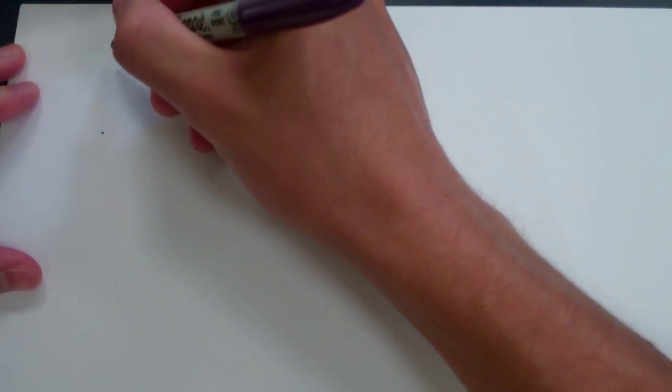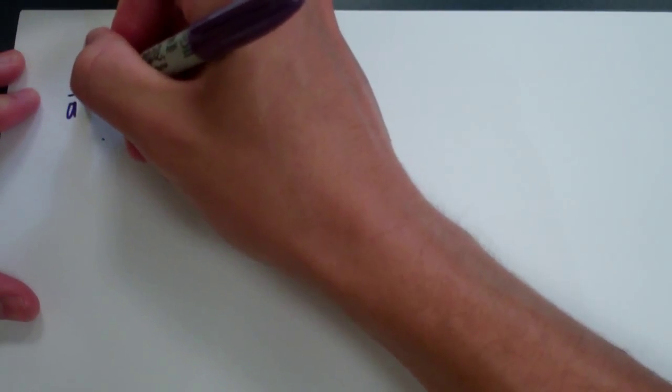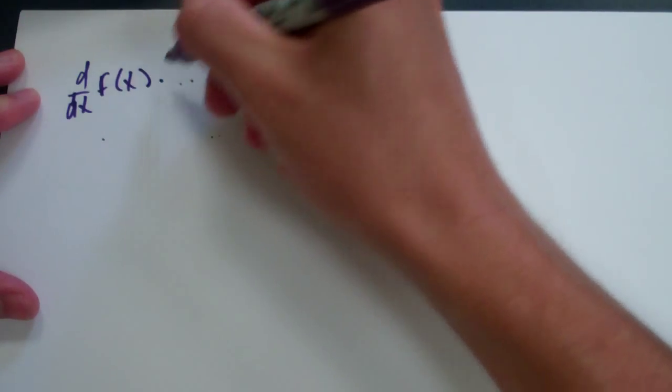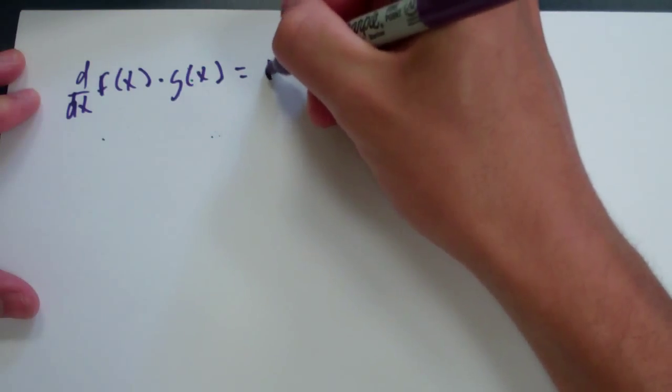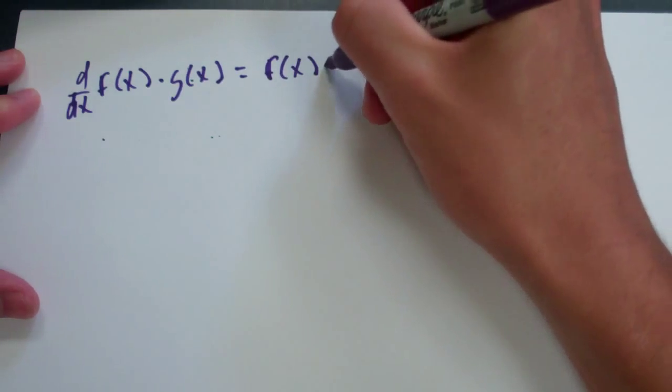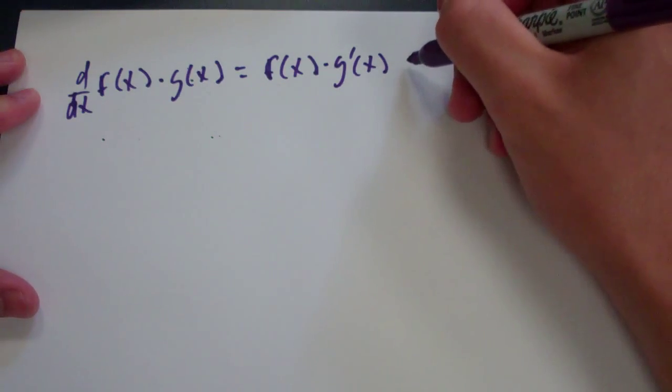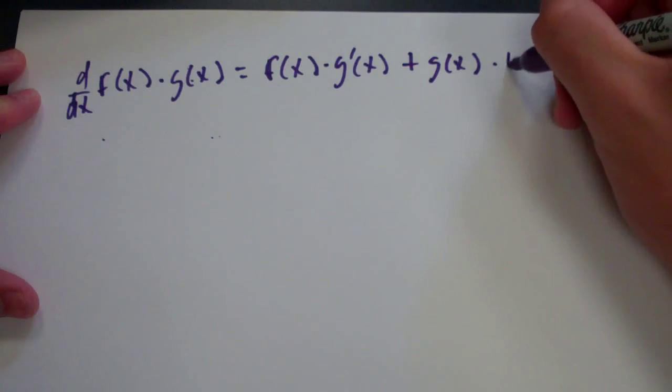If you take the derivative of f(x) of a function times the derivative of another function, then you'll have the first function times the derivative of the second function plus the second function times the derivative of the first function.